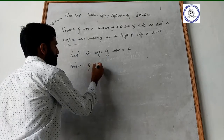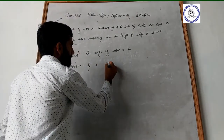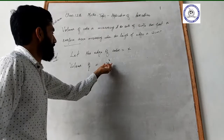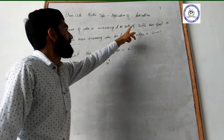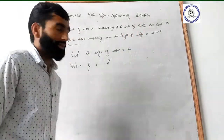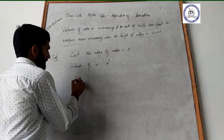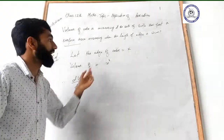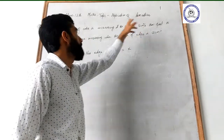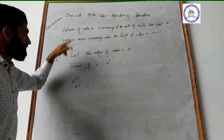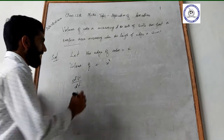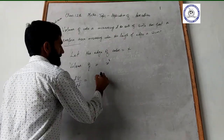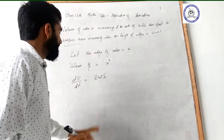Volume of cube equals side cubed, that is x³. The rate of change is 8 cm³ per second. Therefore, dV by dt is the rate of change with respect to time — per second. So we differentiate V with respect to t. We are given dV by dt equals 8 cm³ per second.